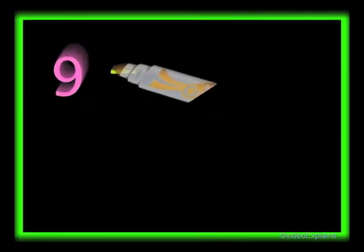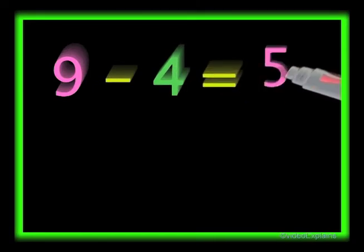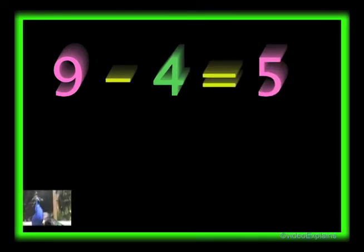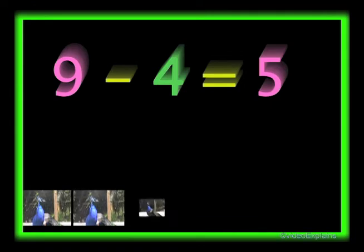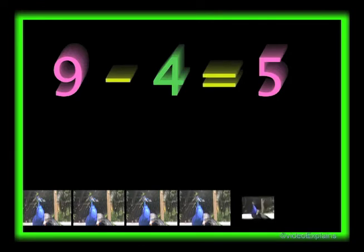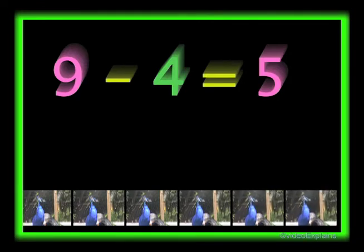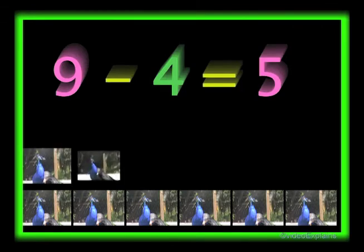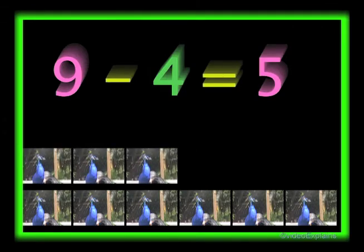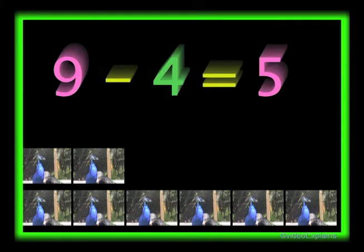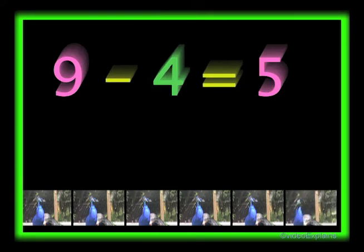Nine minus four equals five. There are nine peacocks: one, two, three, four, five, six, seven, eight, and nine. If four peacocks fly away, then five peacocks will be left. One, two, three, and four. So nine minus four equals five.